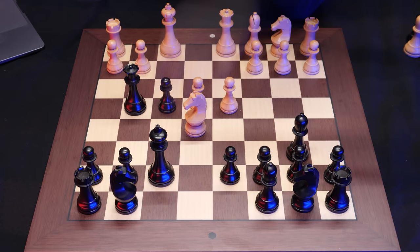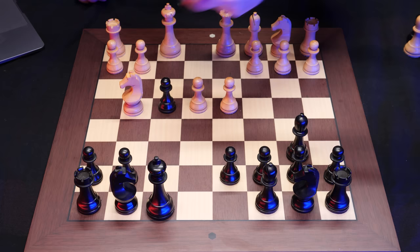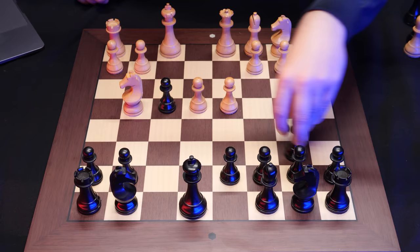And then Knight to E5, check to the king and attacking the queen. This is how the game ends. Black resigned. Let's put up the pieces again and go to a different game from the same player.